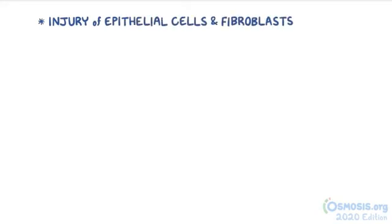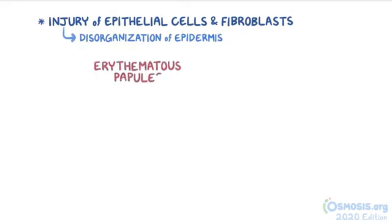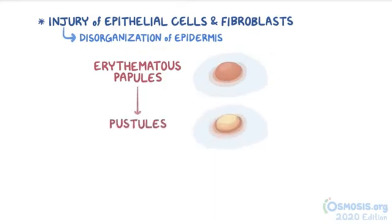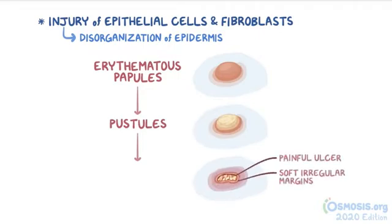All of these processes lead to injury of epithelial cells and fibroblasts, which lead to disorganization of the epidermis and formation of erythematous papules, which are red elevations of the skin. Eventually, papules collect pus and become pustules. Then the pustules rupture, leaving behind an extremely painful ulcer with soft, irregular margins, called a soft chancre.